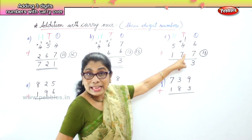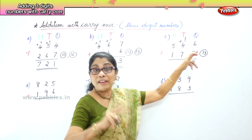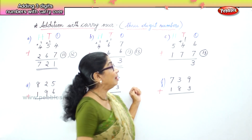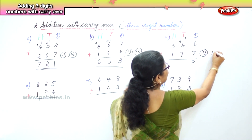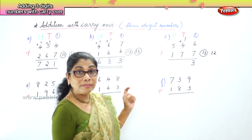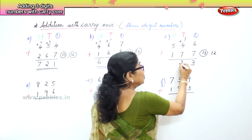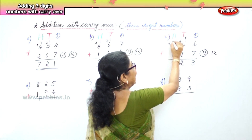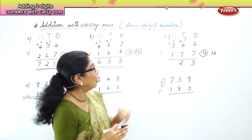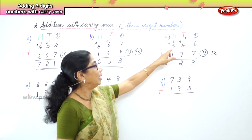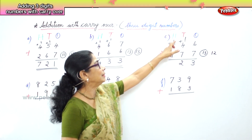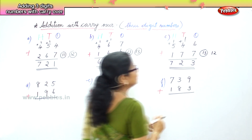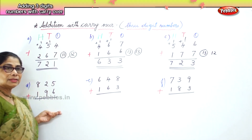5 tens plus 7 tens: count after 5 — 6, 7, 8, 9, 10, 11, 12. So you have 12 tens. 12 tens is 2 tens and 1 hundred to carry over. Put 2 in the tens place and carry 1 to the hundreds place. Now 5 hundreds plus 1 hundred carried is 6, plus 1 more is 7 hundreds. The answer is 723.